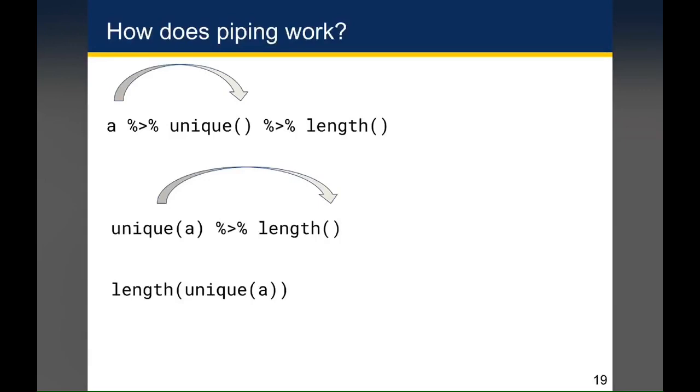And going back to our initial example, what's actually happening with the pipe here is when you write A then unique then length with pipes in it, the first thing that happens is the value A gets inserted into unique. Then the entire expression unique A gets inserted into length such that A pipe unique pipe length is the literally identical code as length unique A.